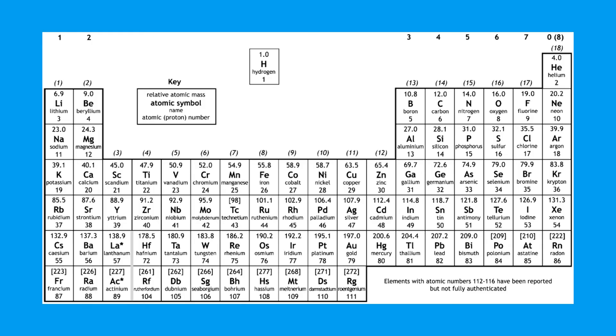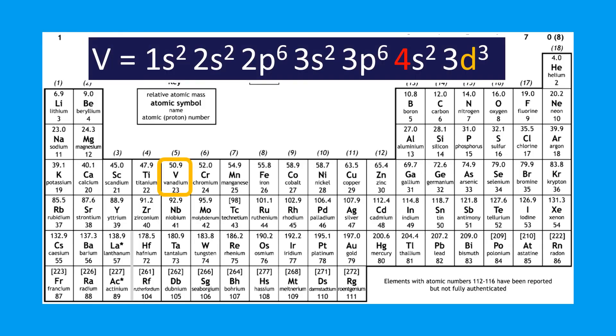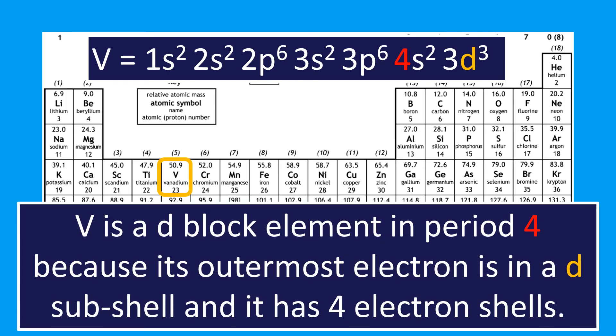Back to vanadium — vanadium didn't have a group number. We classified it as d block because the outermost electrons are in a d subshell. It's in period four because the highest occupied electron shell is the fourth shell — you can see the 4s. It has four shells, but the outermost electrons are classed as being in the d subshell, so it's a period four, d block element.